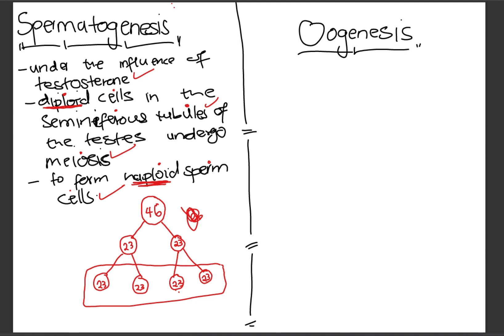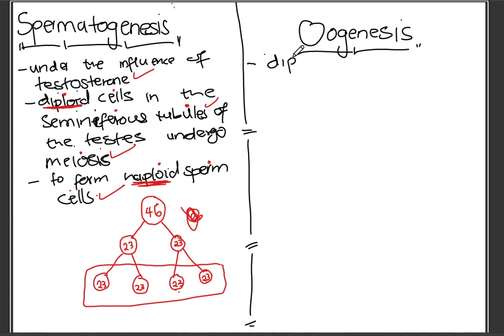Now let's look at oogenesis. This one is normally about five marks in an exam. The first point in oogenesis: you start by telling us about the diploid cells, because here the diploid cells undergo mitosis — then we talk about meiosis. There is actually mitosis taking place in spermatogenesis too, but you don't have to mention it in the matric syllabus when describing that process.